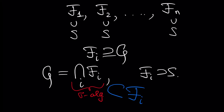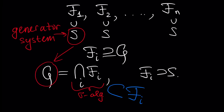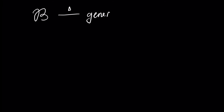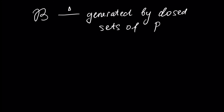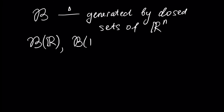This set S is called the generator system, and S generates our minimal sigma algebra G. Next, let's define what a Borel algebra is. This beautiful B stands for the Borel sigma algebra. By definition, this is the sigma algebra generated by closed sets — it can be ℝ, the real numbers, or ℝⁿ. In this case, our Borel set can be denoted as B(ℝ) or B(ℝⁿ). So this is the sigma algebra generated by closed sets on ℝ, or just in ℝ when N is 1.